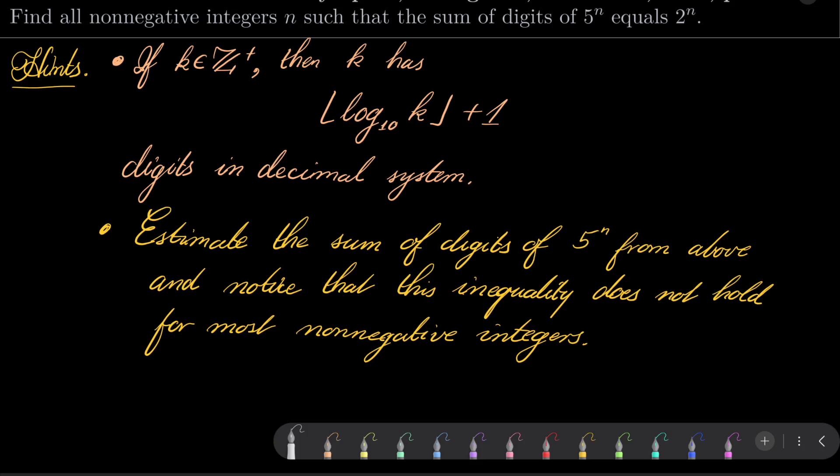It's a well-known fact about the number of digits of any integer. And then try to estimate the sum of digits of 5 to the power of n from above, and notice that this inequality which you get fails to be true for most integers, so only a few are left to be verified by hand.